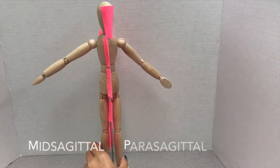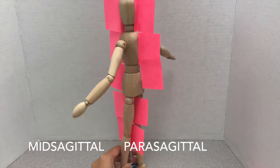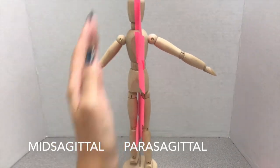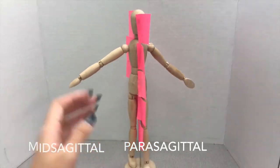And finally, we have midsagittal, which is shown in the video, dividing the body exactly in the middle into left and right. And parasagittal is also dividing into left and right, but not exactly in the middle.